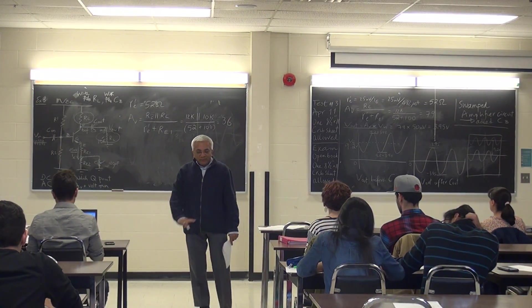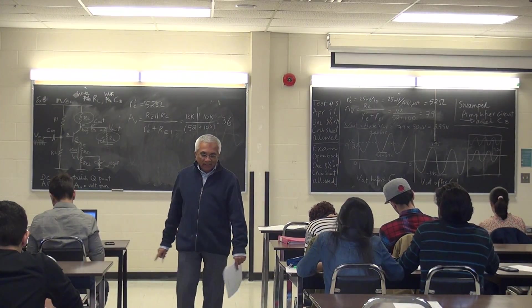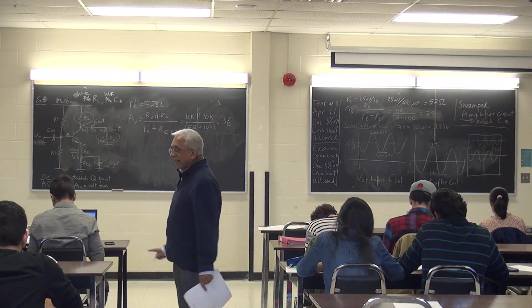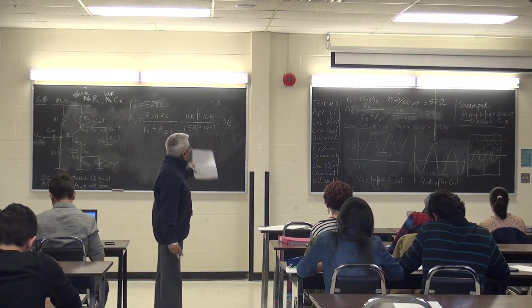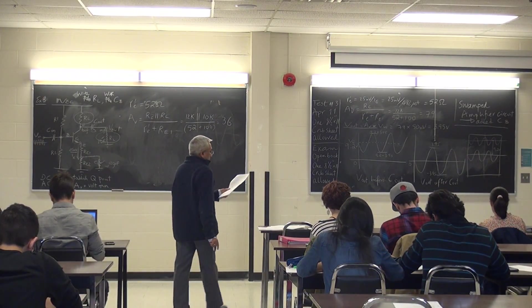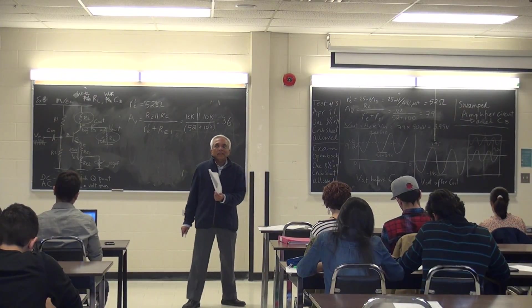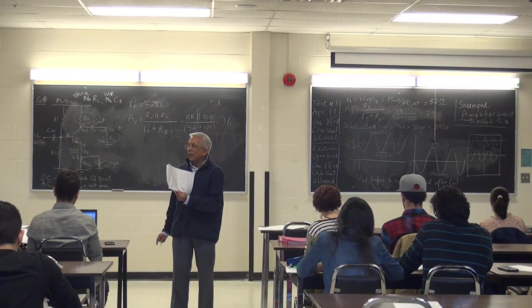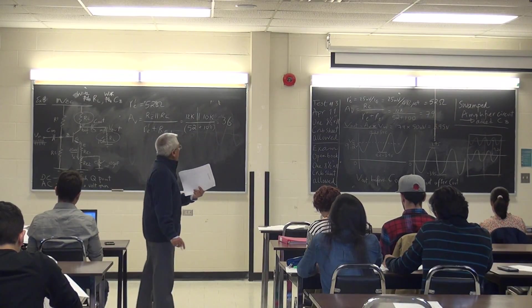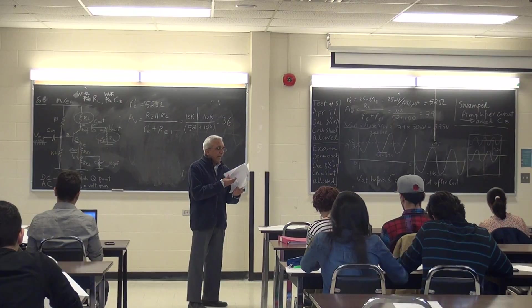So previously the gain was 79. Previously without RL in example 2, the gain was 79. Now it has dropped a little from 79 to 36. Did anybody not get 36? Anybody dispute that answer? We'll use the value of 36 then.